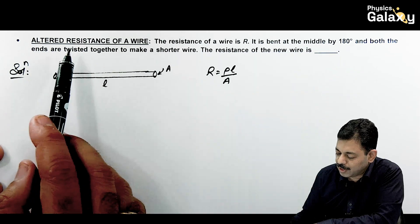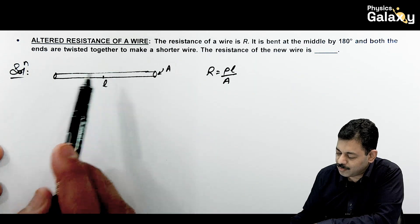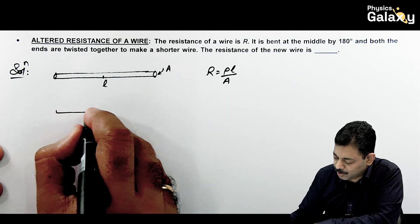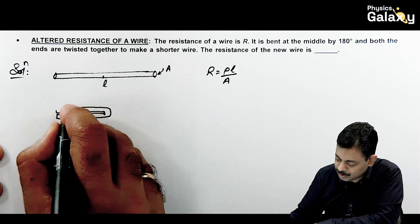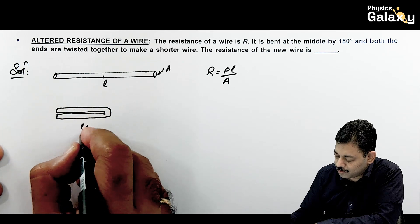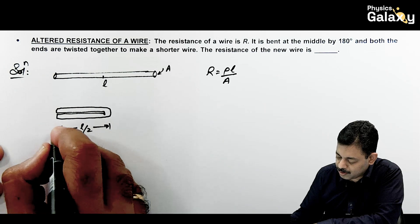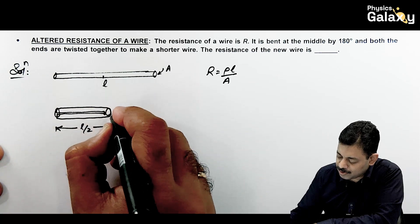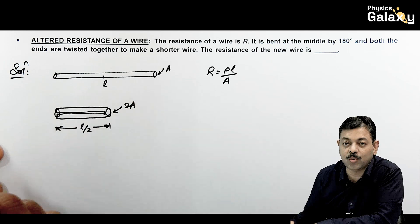Now it is saying both the ends are twisted after bending from the middle. If you bend it from the middle, the wire will be like this. It is bent this way. Length becomes L by 2 from bending, and cross sectional area if you twist them together, this cross sectional area will double, it will be 2A.